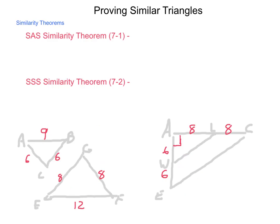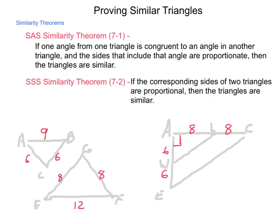First up is our side angle side similarity theorem. We're calling this theorem 7-1. This one states, if one angle from one triangle is congruent to an angle in another triangle and the sides that include that angle are proportionate, then the triangles are similar. Next, we have the side-side-side similarity theorem, which is theorem 7-2. It reads, if the corresponding sides of two triangles are proportional, then the triangles are similar.